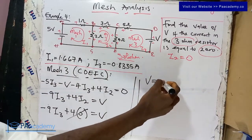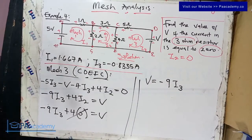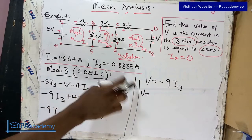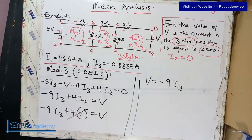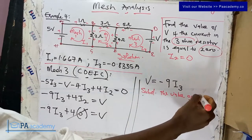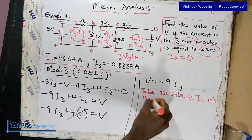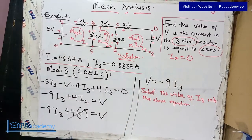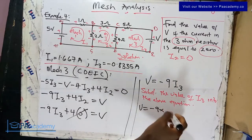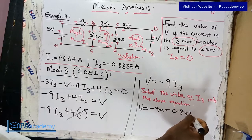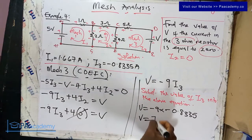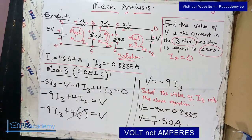So V equals minus 9 times i3. Substituting i3 equals minus 0.8335: V equals minus 9 times minus 0.8335. Multiplying these gives V equals 7.50. With that we have found the value of V.